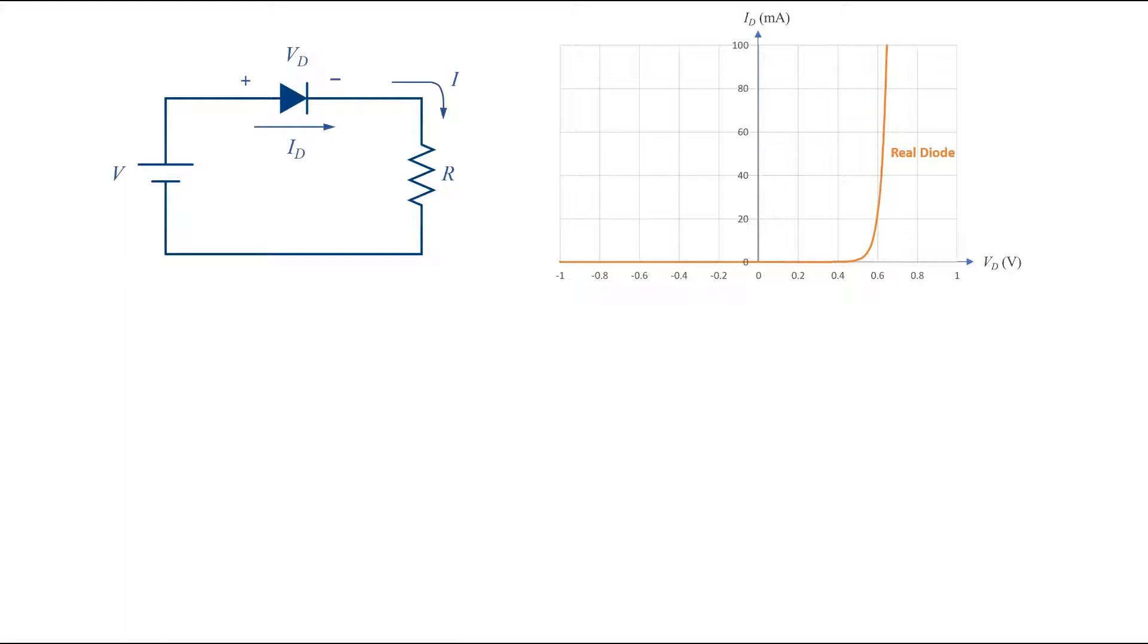There are different ways that we can do this linear approximation depending on the accuracy we expect from the model. For example here I have used four segments which have a very good fit to the real characteristics. However, in most cases we do not need that much accuracy.